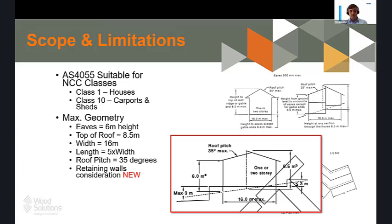Particularly around the height of buildings — taller internal wall frames are now the norm. Most houses are 2600 if not 2700 internal wall height, and when you add that together, put it on a slab and add a floor level of I-joists or trusses, it doesn't take much to get the roof pitch outside the scope of eight and a half metres tall. We need to review that so we retain a useful deemed-to-satisfy document rather than one requiring unnecessary engineering involvement.